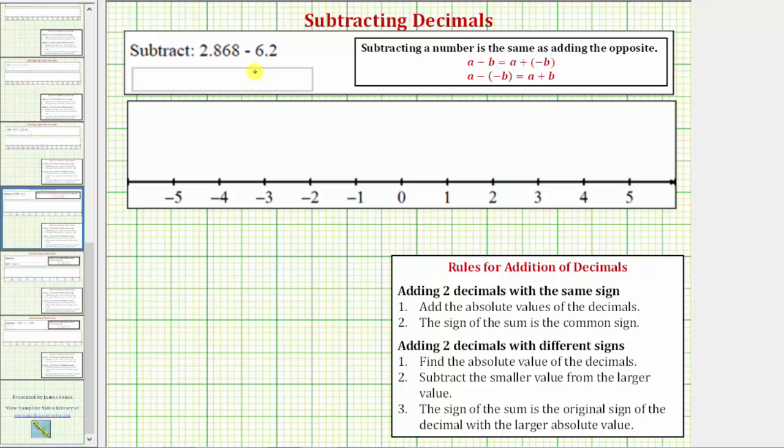We can write this difference as a sum because subtracting a number is the same as adding the opposite. So because subtracting b is the same as adding negative b, we can write 2.868 minus 6.2 as 2.868 plus negative 6.2.